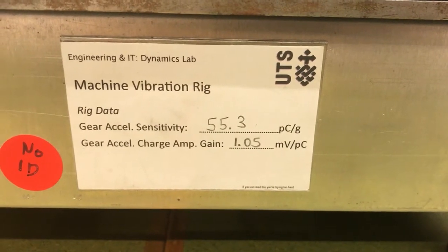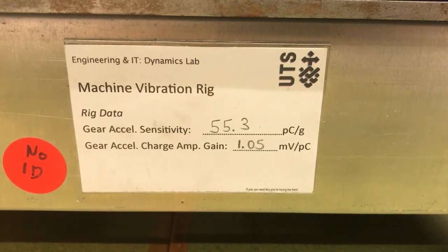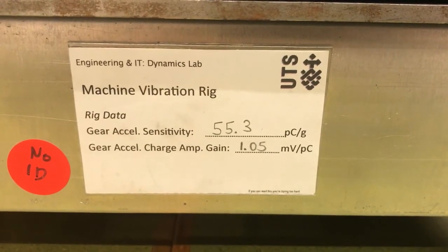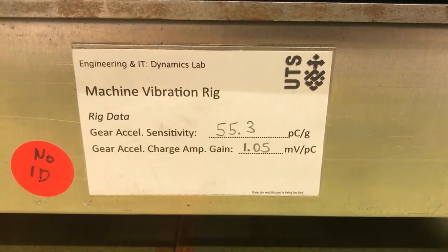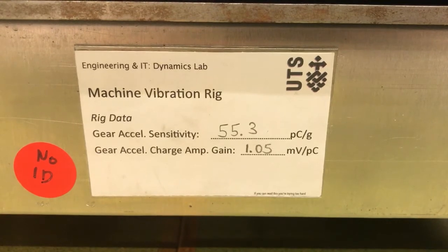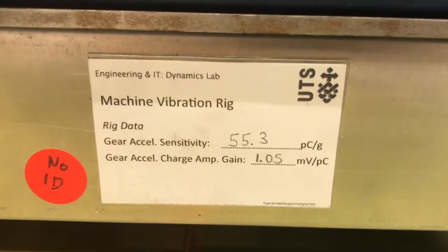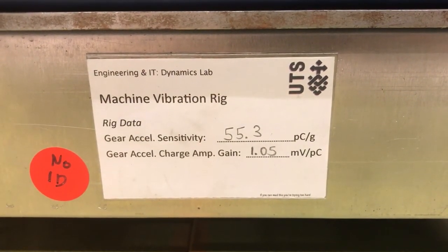I just want to show here that you can see the gear accelerometer sensitivity given in picocoulombs per g of 55.3 and the gear accelerometer charge amplifier gain is given as 1.05 millivolts per picocoulomb. So with these two pieces of information, it's possible to determine the overall channel sensitivity for that gear accelerometer channel.